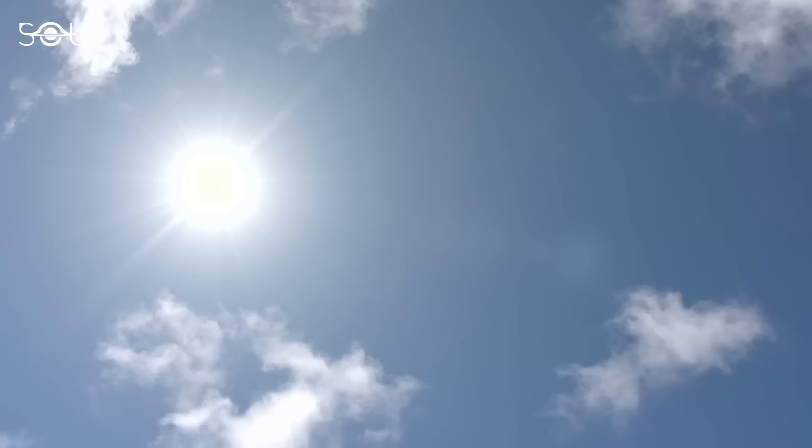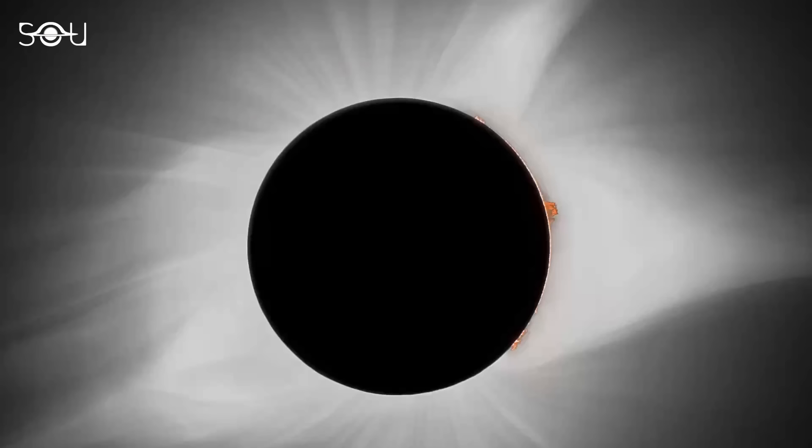Usually, this layer is hidden in the glare of the sun. However, it can be easily seen during a total solar eclipse and through a coronagraph, which blocks direct sunlight from the sun.